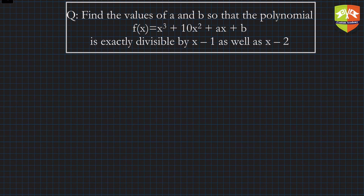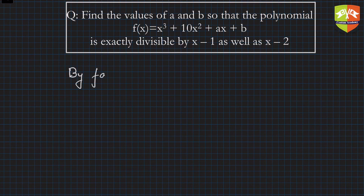Now let's look at the next question: find the values of a and b so that the polynomial f(x) equals x cube plus 10x squared plus ax plus b is exactly divisible by x minus 1 as well as x minus 2. Again we'll use factor theorem.